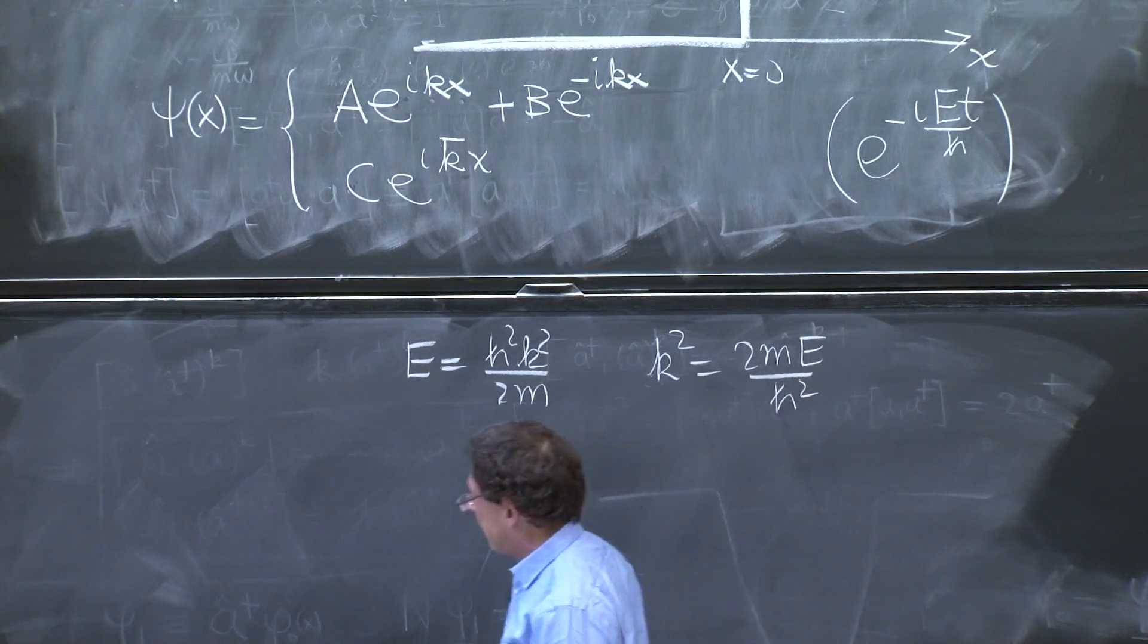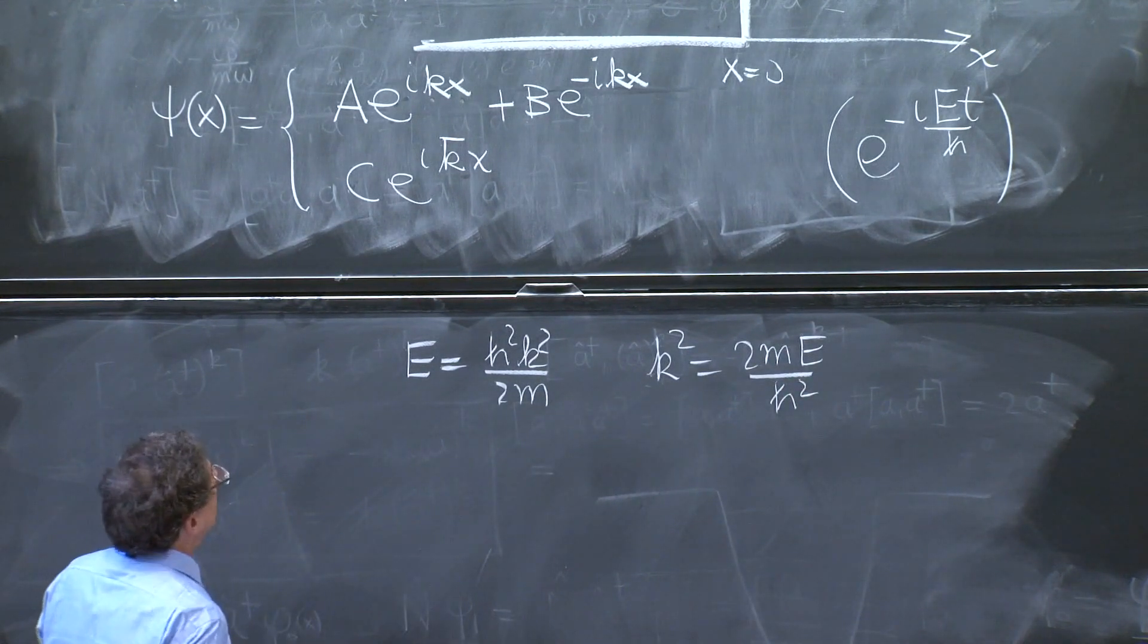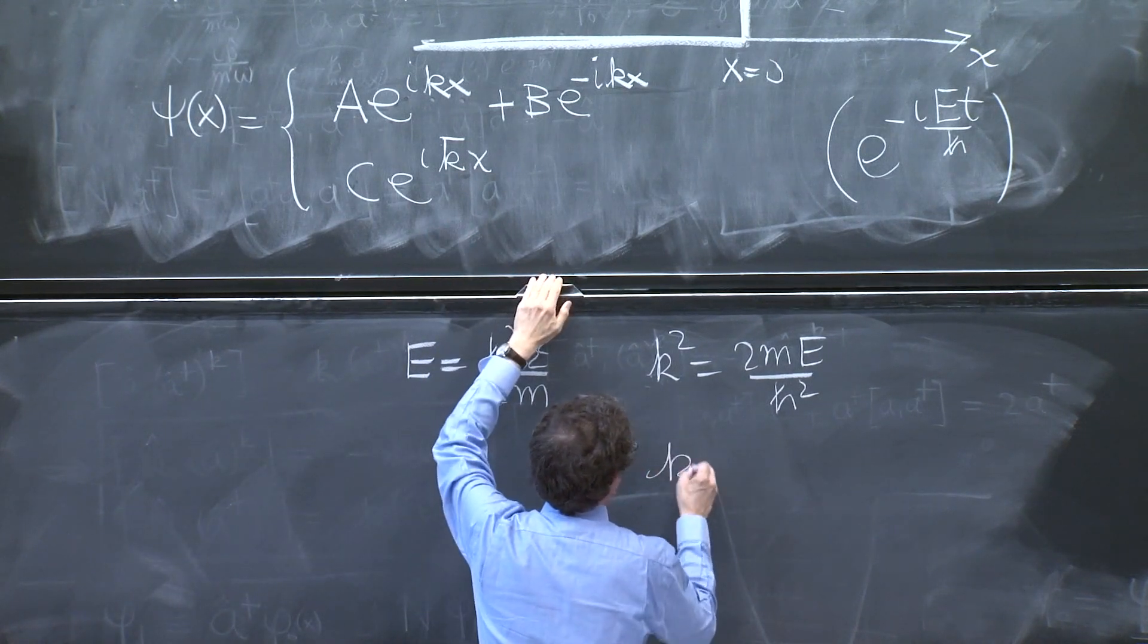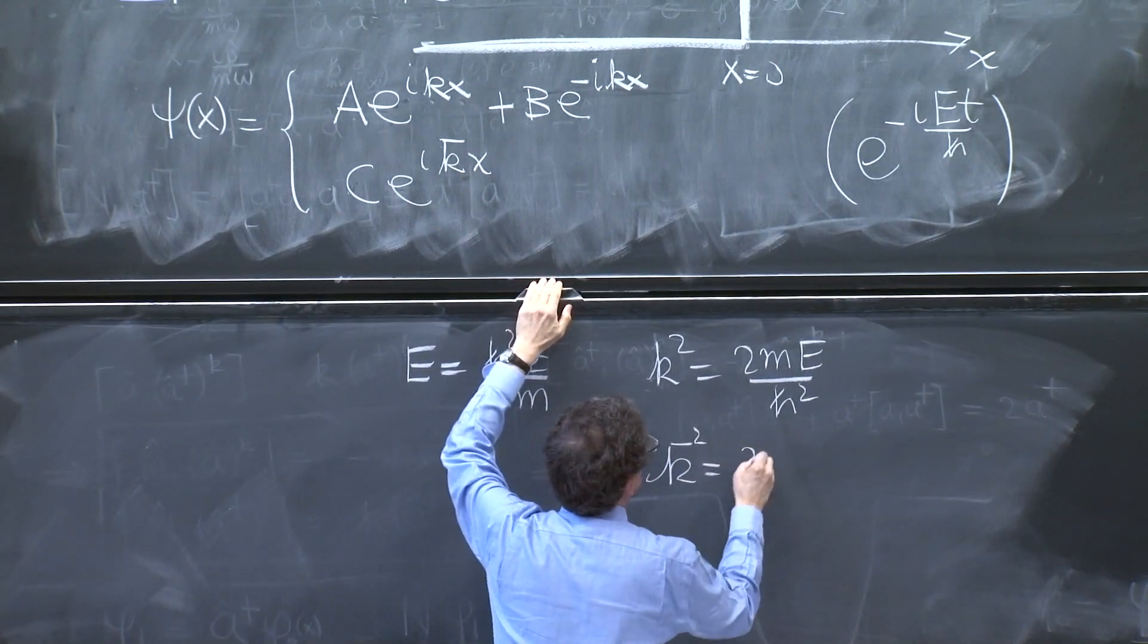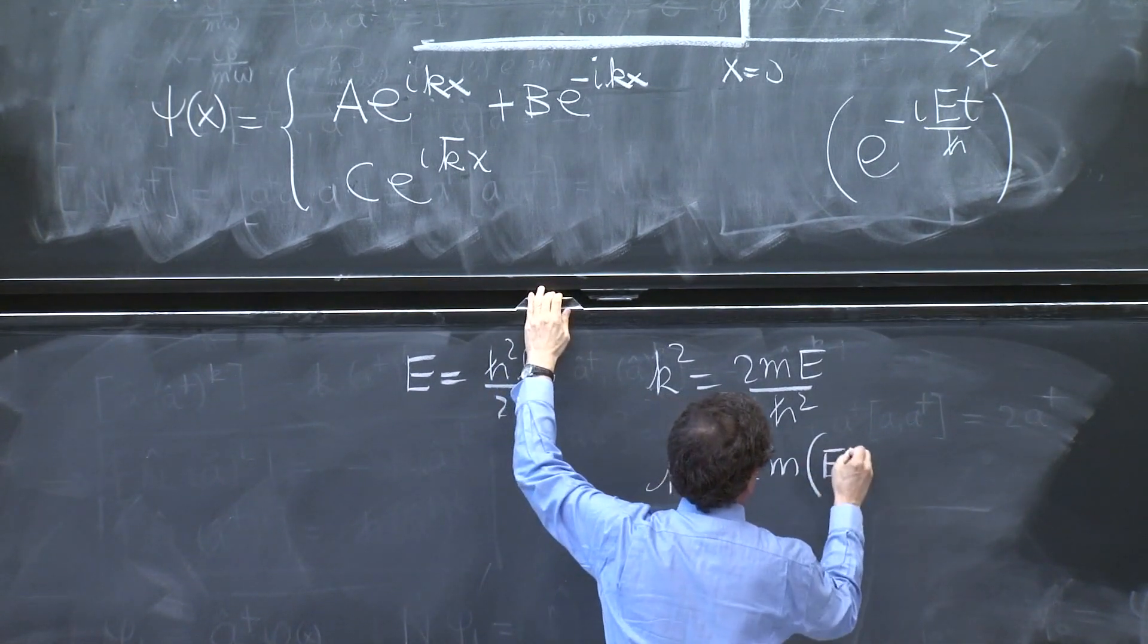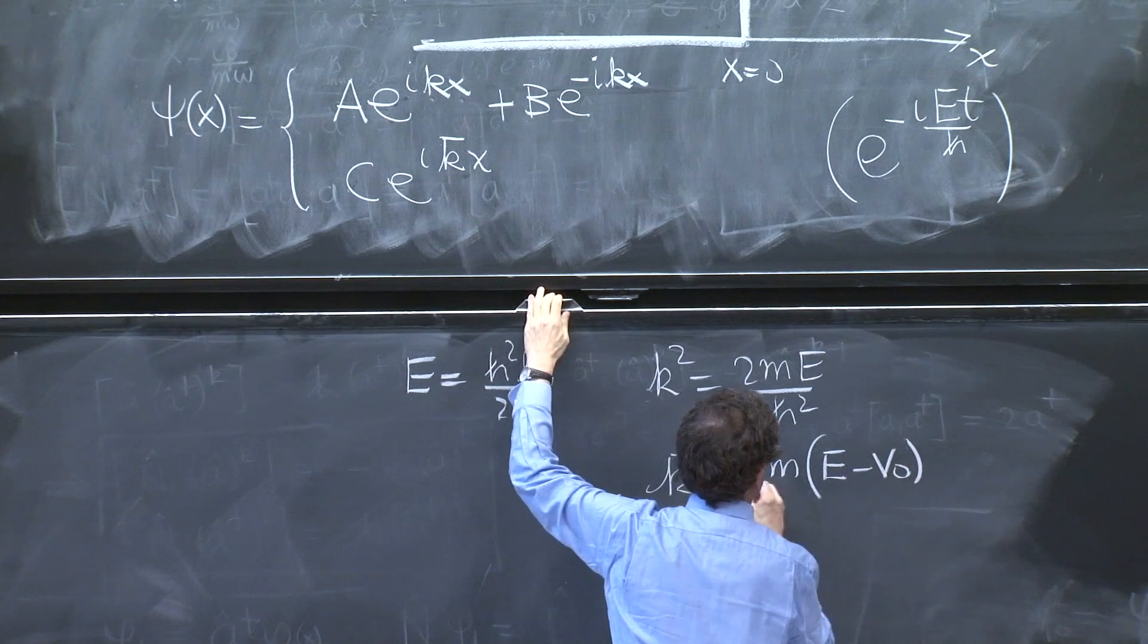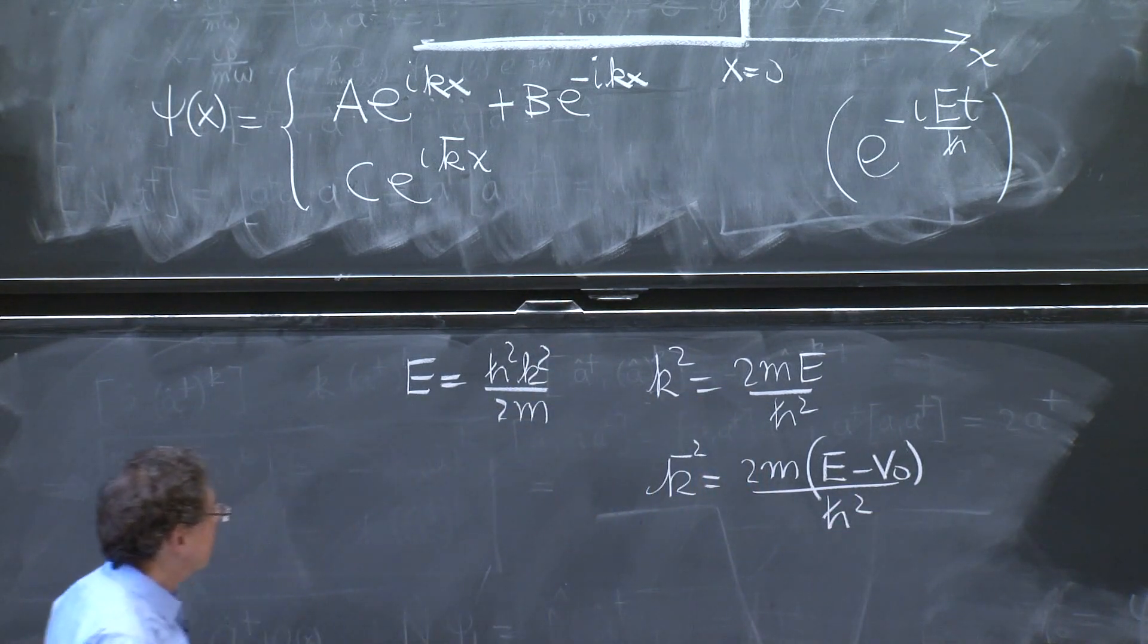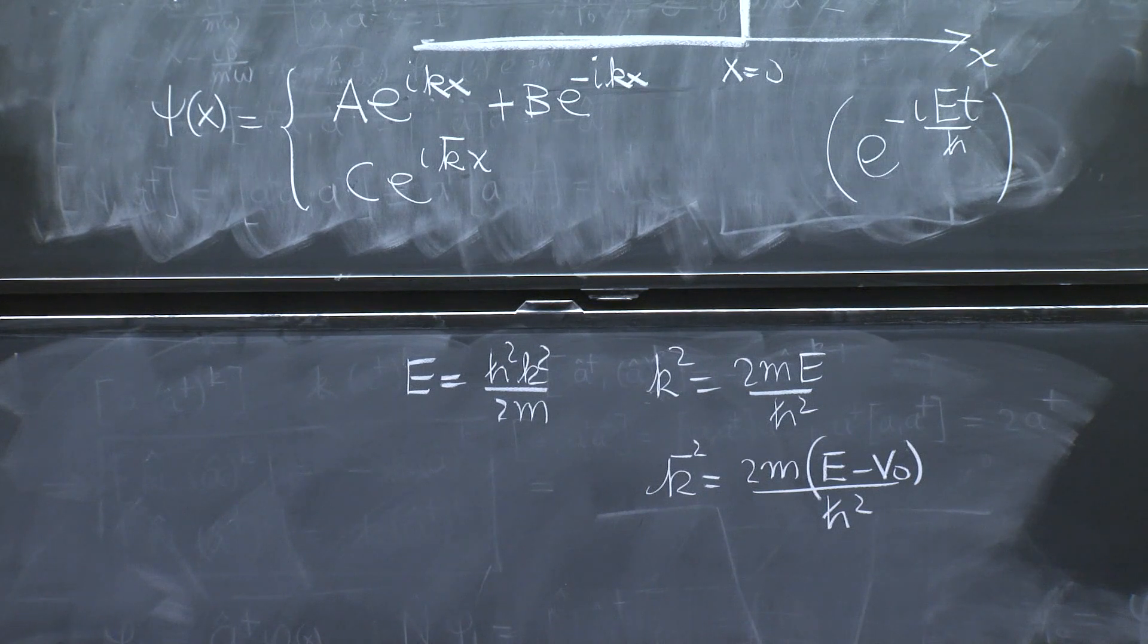The intuition for k bar should be that k bar squared is 2m times the kinetic energy. So it should be E minus v naught over h squared. So these are k and k bar.